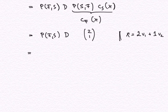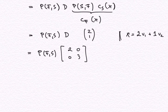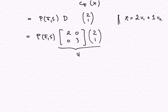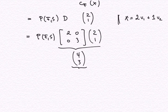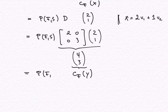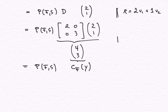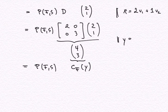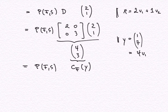Next comes the multiplication with the diagonal matrix D = [2, 0; 0, 3] times the vector (2, 1). Doing this numerically, I get (4, 3). And I recognize (4, 3) as the F coordinates of y. In other words, y — which we remember as (1, 7) in standard coordinates — has the representation 4 times v1 plus 3 times v2 in terms of the basis F.